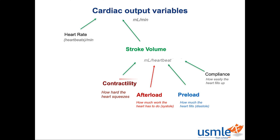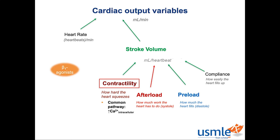Contractility is one of the most intuitive parameters that increases stroke volume — you squeeze harder, and the amount of blood you pump out increases. And as with all muscle contractions, what intracellular ion permits the contraction to occur? Calcium. There are more sections that discuss the specific importance of calcium in a cardiac myocyte versus a skeletal muscle, but the point is: the more calcium in the cell, the more actin-myosin crossbridge formation, and the stronger the contraction. The body's main endogenous mechanism for increasing contractility is through the sympathetic nervous system, specifically the beta-1 adrenergic receptor, which increases intracellular calcium through the protein kinase A pathway.